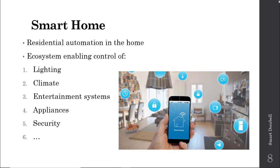We also have devices that control entertainment systems. We have a Google Home — actually two of them — and it can control the TV. There's a host of appliances that can be controlled with these smart home devices. And then security is the one we're going to be looking at in this lecture series. We're going to dive deeper into one element of this ecosystem — security — and specifically into one element of the security sub-ecosystem: the smart doorbell. There are also other smart security alarms, CO2 detectors, and other devices now available through Internet of Things approaches.